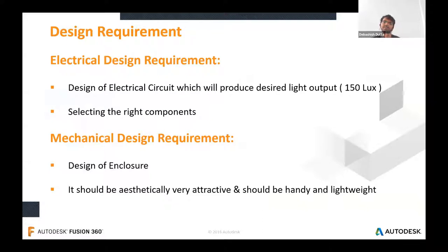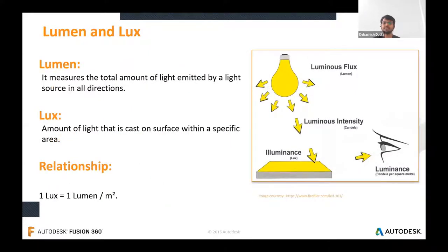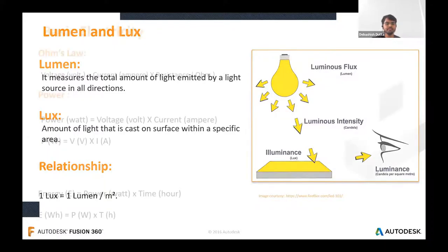There are two design requirements for making a product: electrical design requirements and mechanical design requirements. In this webinar we'll discuss both. In the electrical design requirement we'll select components and design the PCB schematic in EAGLE. In the mechanical design requirement, Barul will cover how a 3D-printed custom enclosure is made for the solar lamp PCB. Before diving into the design, we should understand some basics: lumens is the total amount of light emitted from a source in all directions, and lux is lumens per meter squared.